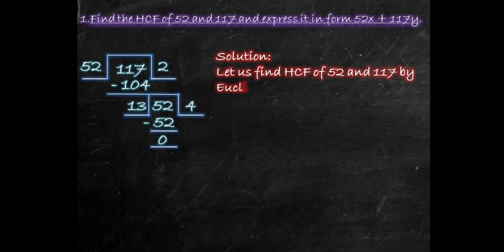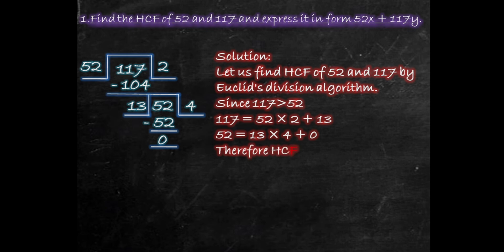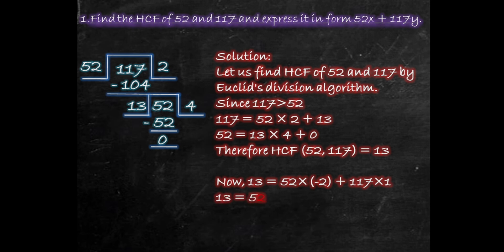Solution: 117 is greater than 52, so 117 equals 52 multiplied by 2 plus 13. Then 52 equals 13 multiplied by 4 plus 0. Therefore, HCF of 52 and 117 equals 13. Now, 13 equals 52 multiplied by minus 2 plus 117 multiplied by 1. Therefore, 13 equals 52X plus 117Y, where X equals minus 2 and Y equals 1.